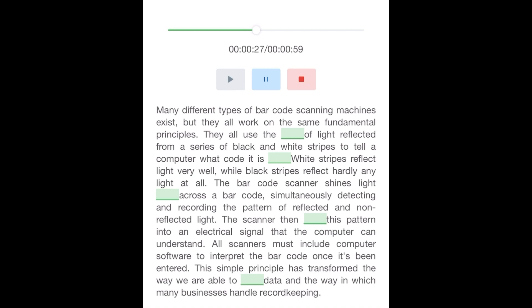The barcode scanner shines light sequentially across the barcode, simultaneously detecting and recording the pattern of reflected and non-reflected light. The scanner then translates this pattern into an electrical signal that the computer can understand. All scanners must include computer software to interpret the barcode once it's been entered. This simple principle has transformed the way we are able to manipulate data and the way in which many businesses handle record-keeping.